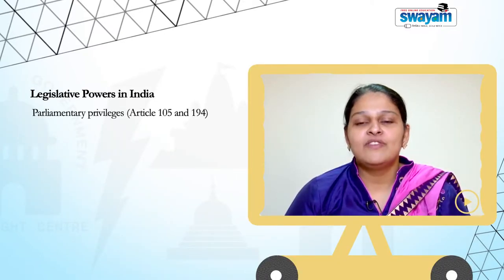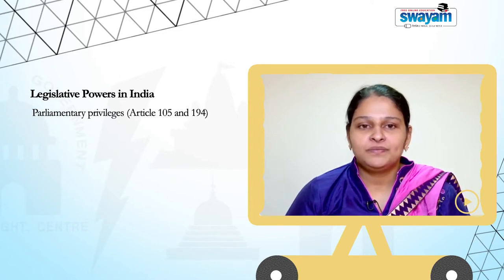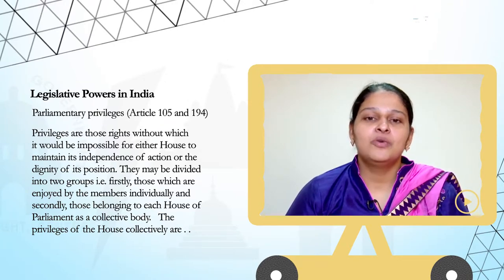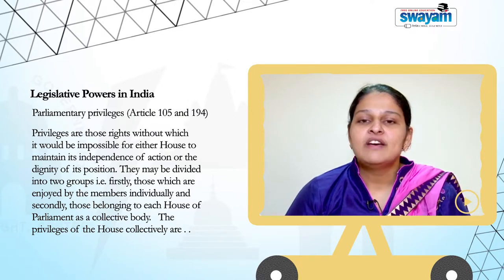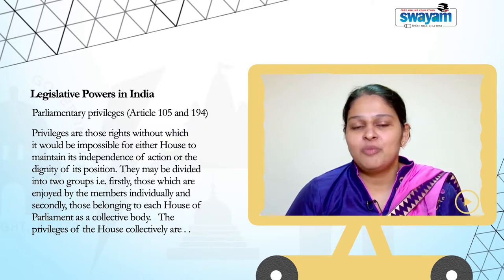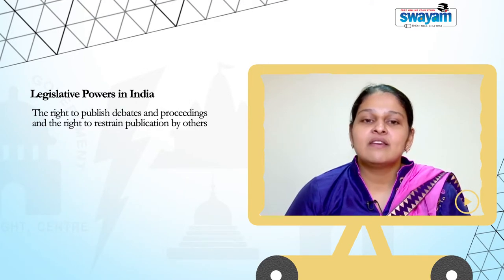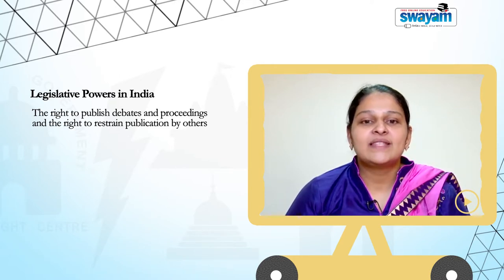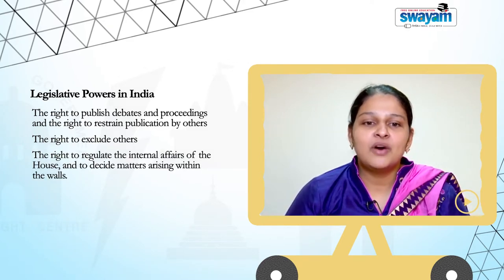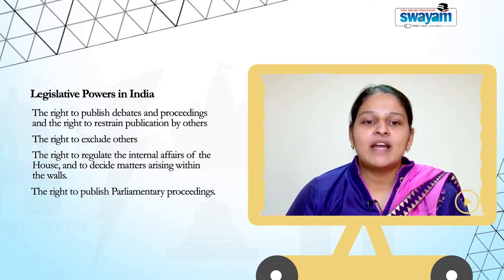Parliamentary Privileges under Articles 105 and 194. Privileges are those rights without which it would be impossible for either House to maintain its independence of action or the dignity of its position. They may be divided into two groups: firstly, those enjoyed by the members individually, and secondly, those belonging to each House of Parliament as a collective body. The privileges of the House collectively are: first, the right to publish debates and proceedings and the right to restrain publication by others; secondly, the right to exclude others; third, the right to regulate the internal affairs of the House; fourthly, the right to publish parliamentary proceedings.